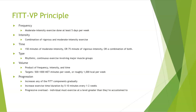Progression involves increasing any one of the FITT components gradually. You can increase exercise time and duration by about 5 to 10 minutes every 1 to 2 weeks — that's generally the gold standard for increasing duration. Progressive overload is defined as the individual must exercise at a level greater than they are accustomed to. Thank you for watching this video. Chapters 4, 5, 6, and 7 will be in the next video.